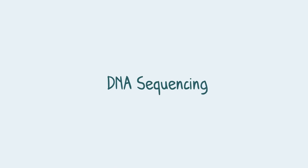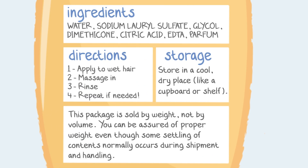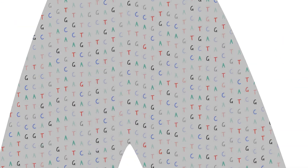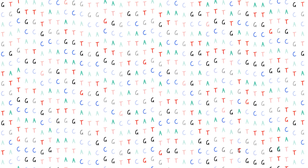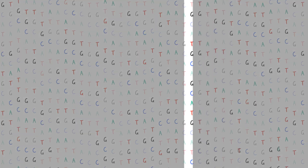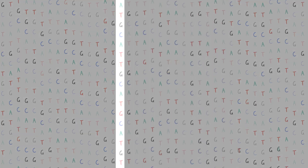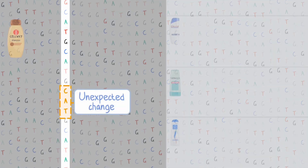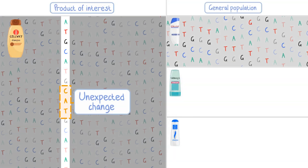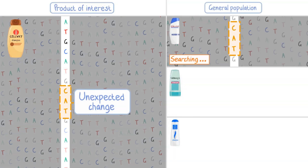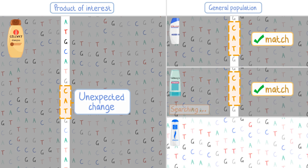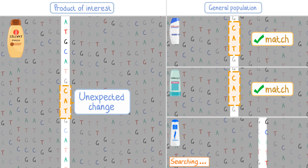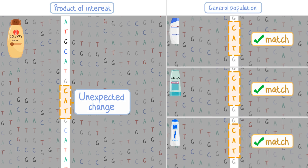DNA sequencing is the process of a scientist reading the information on the label to try and figure out whether a cell will be able to use that product. The scientist carefully reads the DNA sequence to find any regions where the pattern of letters is unexpected, and compares it with the same region in the DNA sequence of people in the general population. In this example, the unexpected change matches differences found in people from the general population.